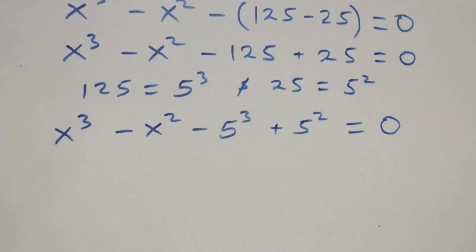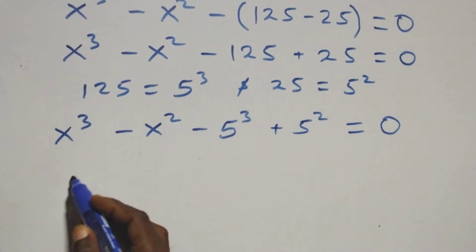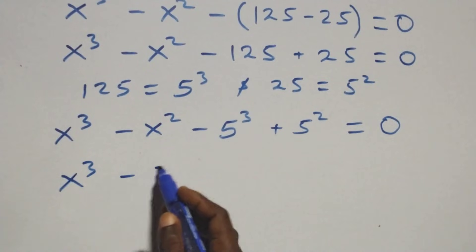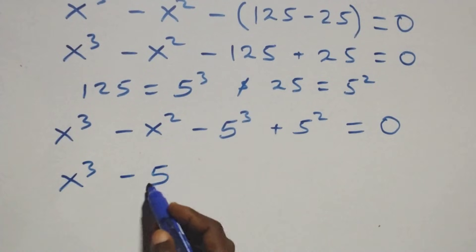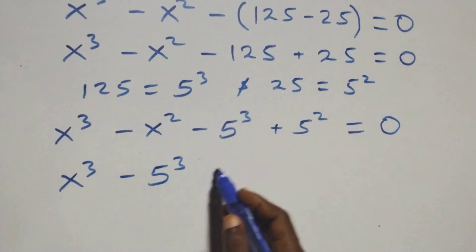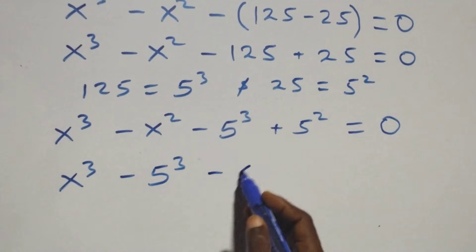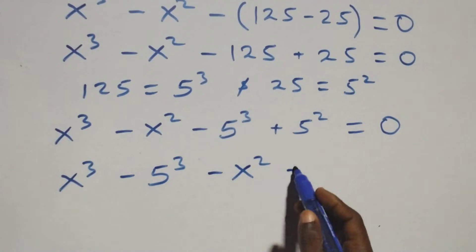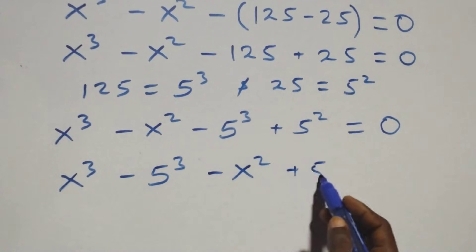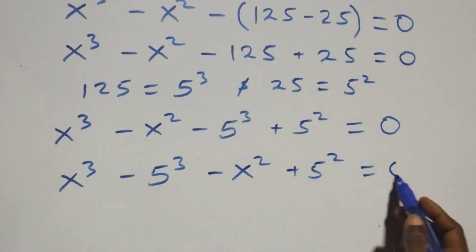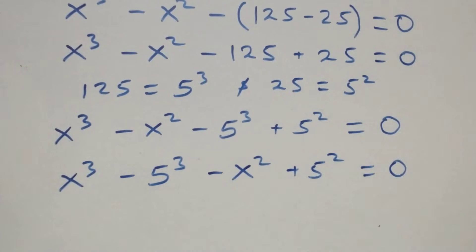Then when we rearrange, bringing the power-3 terms together, we have x raised to power 3 minus 5 raised to power 3, then the power-2 terms together: minus x raised to power 2 plus 5 raised to power 2, equals to 0.